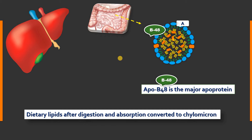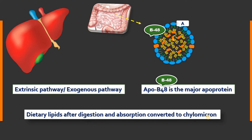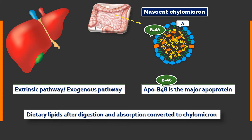The metabolism of chylomicron means it is the metabolism of dietary lipids after digestion and absorption. Dietary lipids are converted to chylomicron in the intestinal mucosal cell, and this pathway is also known as the extrinsic or exogenous pathway. The chylomicron synthesized by the intestinal mucosal cell is called nascent chylomicron, and it has apolipoprotein B48 and a small amount of apolipoprotein A.